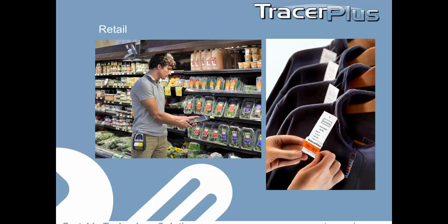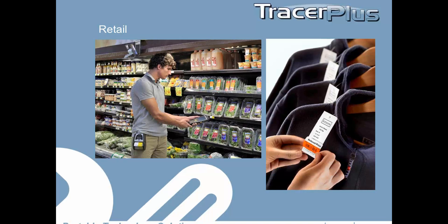With a Tracer Plus price check app, you can significantly reduce repricing and labeling costs as well as save money by reducing printing errors. Reprinting damaged or lost labels on demand is a great way to save time and money. As well as when you're inventorying items and you see something damaged or needs to be repriced, you can do that on demand. With Tracer Plus shipping and receiving applications, you can increase your accuracy when labeling products as they arrive.